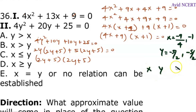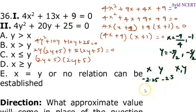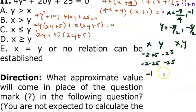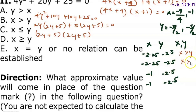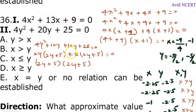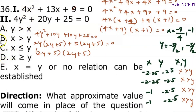Now finding the x and y relationship. X here is minus 9 by 4, which is minus 2.25, and y is minus 2.5, so x is greater than y. Again, x is minus 2.25, y is minus 2.5, x is greater than y. When x is minus 1, x is greater than y. In all cases x is greater than y, so the relationship between x and y in these two equations is x is greater than y.